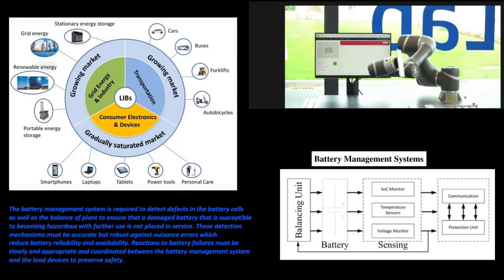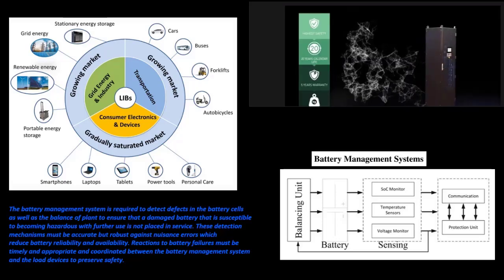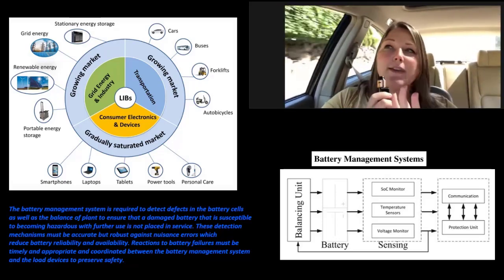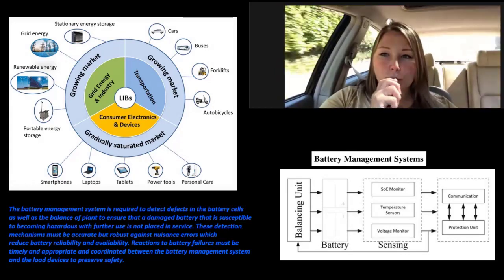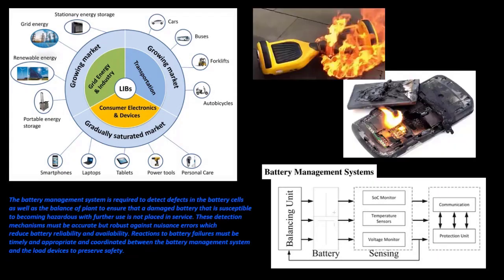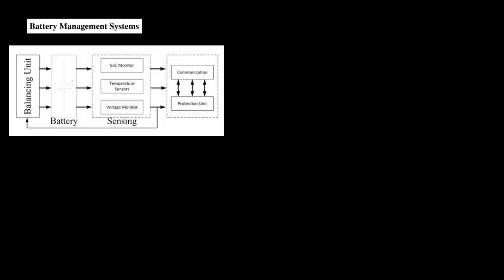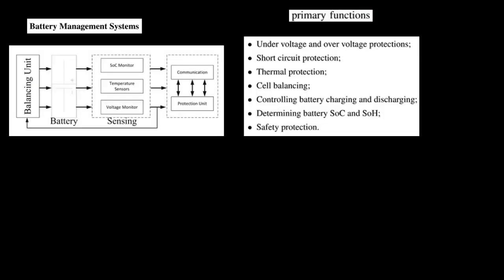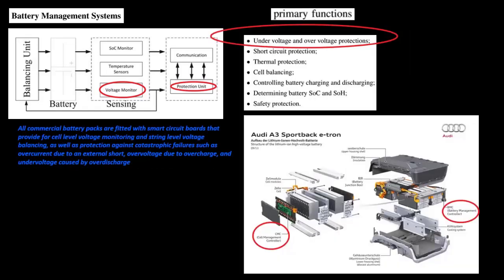Reactions to battery failures must be timely and appropriate, and coordinated between the battery management system and the load devices to preserve safety. Without this protection, not only the battery of the vehicle could explode, but also that of an e-cigarette. All commercial battery packs are fitted with smart circuit boards that provide cell-level voltage monitoring, string-level voltage balancing, and protection against catastrophic failures such as overcurrent from external shorts, overvoltage, and undervoltage caused by over-discharge.